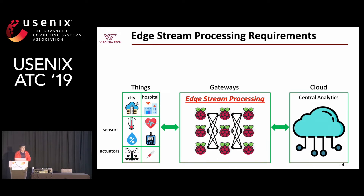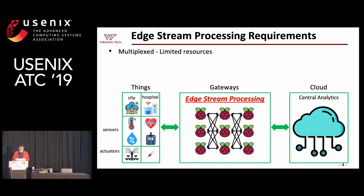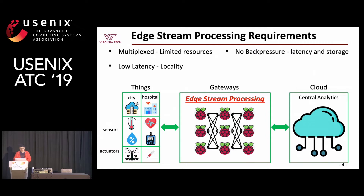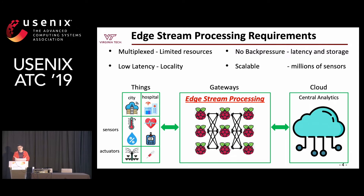We list four unique edge stream processing requirements. First, multiplex, since we have limited resources at the edge. Second, low latency, since the edge has the advantage of locality. Third, no back pressure, because it triggers latency and storage issues. And fourth, scalable — consider if we have millions of sensors in a smart city.